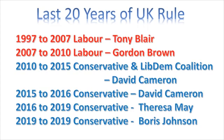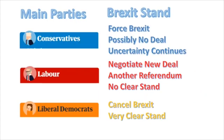In the last 20 years, the UK has been ruled by Labour for about 13 years and by the Conservatives for about seven to eight years. From 1997 to 2007 it was Tony Blair, then Gordon Brown, then a coalition government, and now it is the Conservative Party.